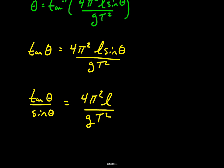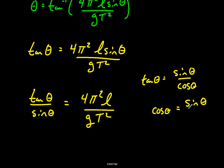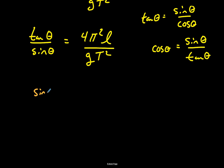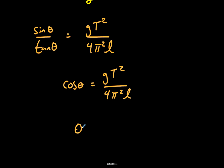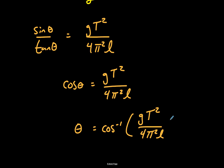Since tanθ/sinθ = (sinθ/cosθ)/sinθ = 1/cosθ, the left side becomes 1/cosθ. Flipping both sides, we arrive at cosθ = g·T²/(4π²L). Isolating T gives T = √(cosθ·4π²L/g).